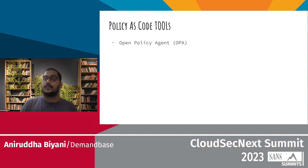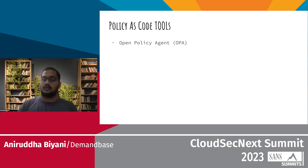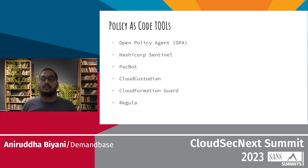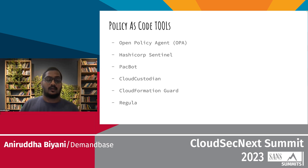When looking at policy as code tools, there were a bunch we evaluated: OPA, which pretty much everybody is familiar with and uses Rego to define policy; HashiCorp Sentinel; Packer; Cloud Custodian; CloudFormation Guard; and Regula. All of these are policy as code tools that we potentially evaluated.